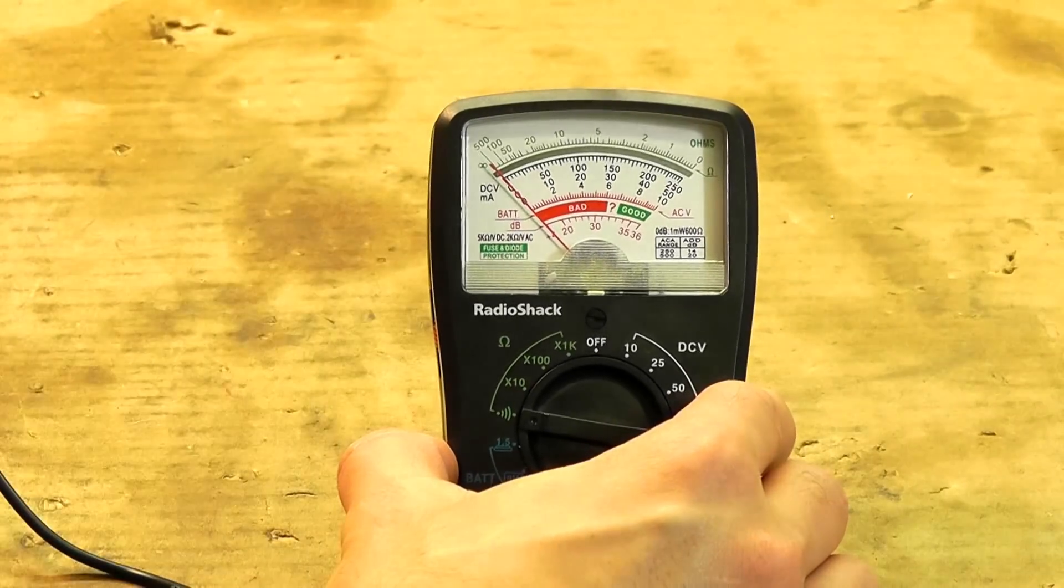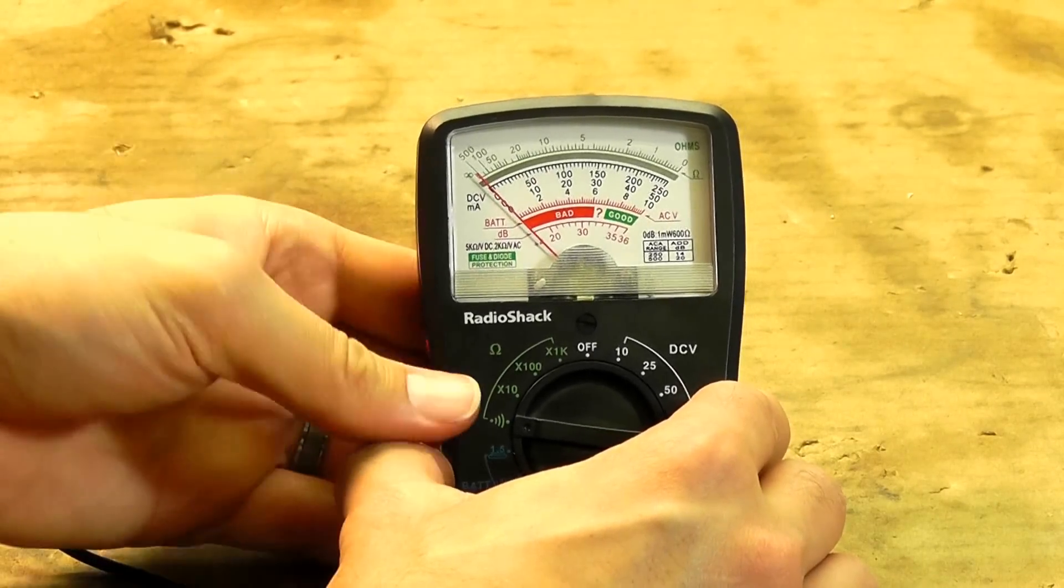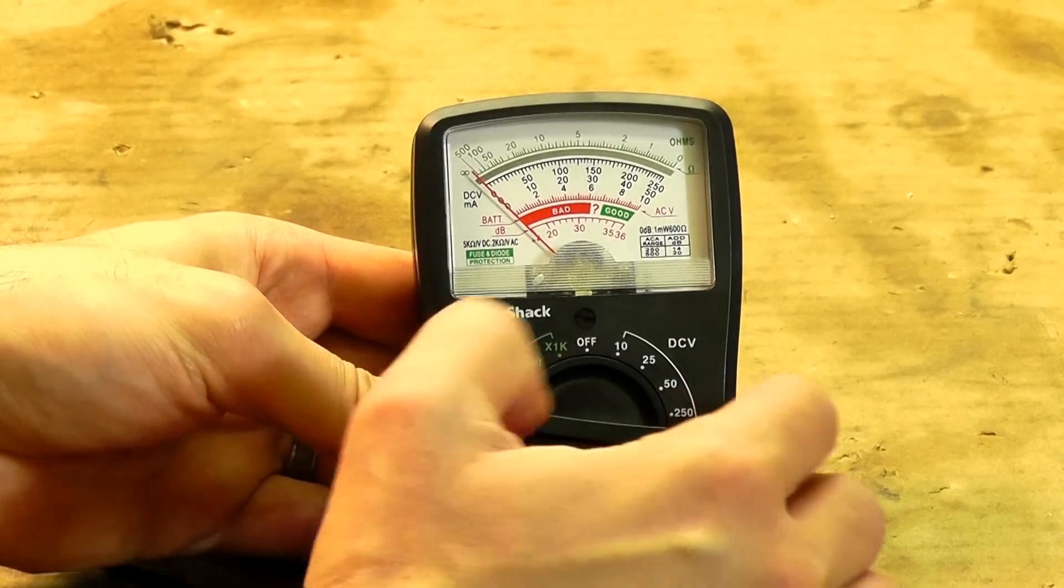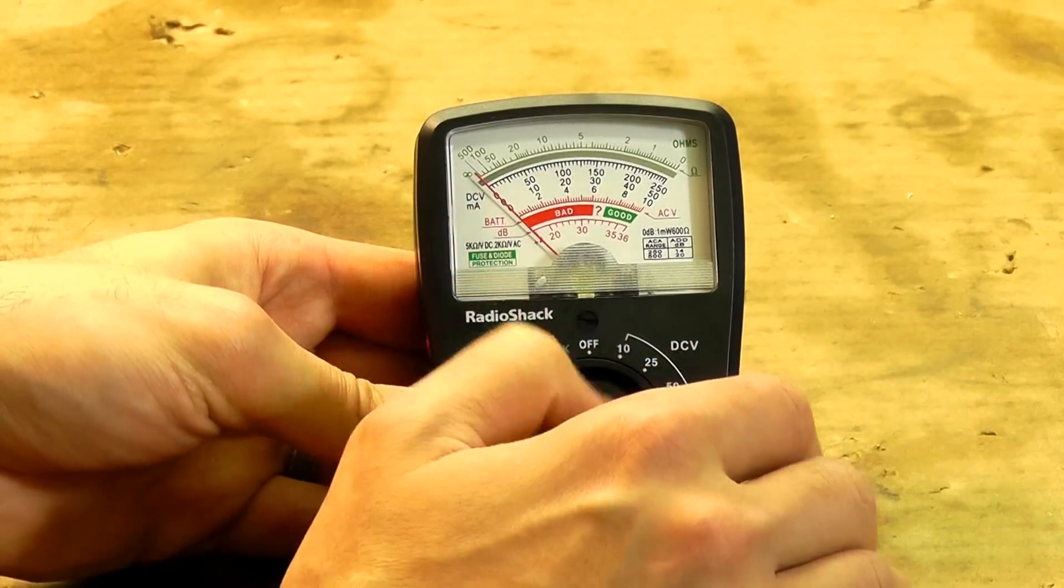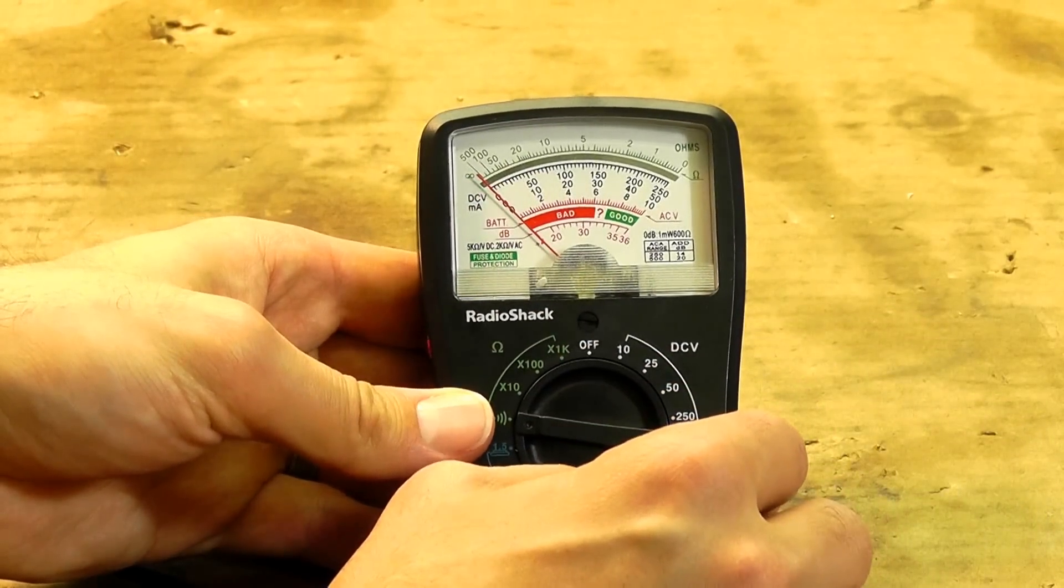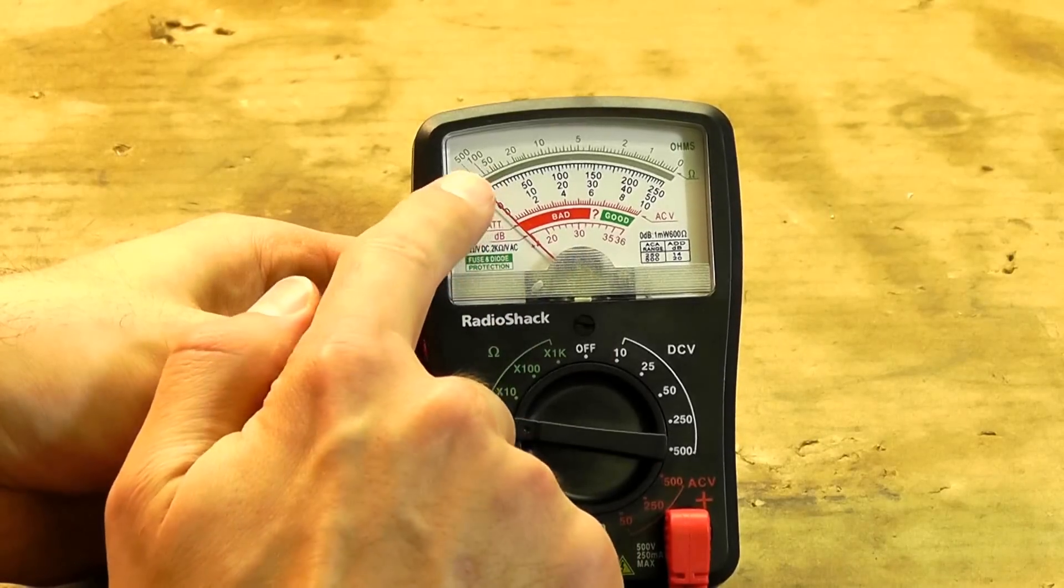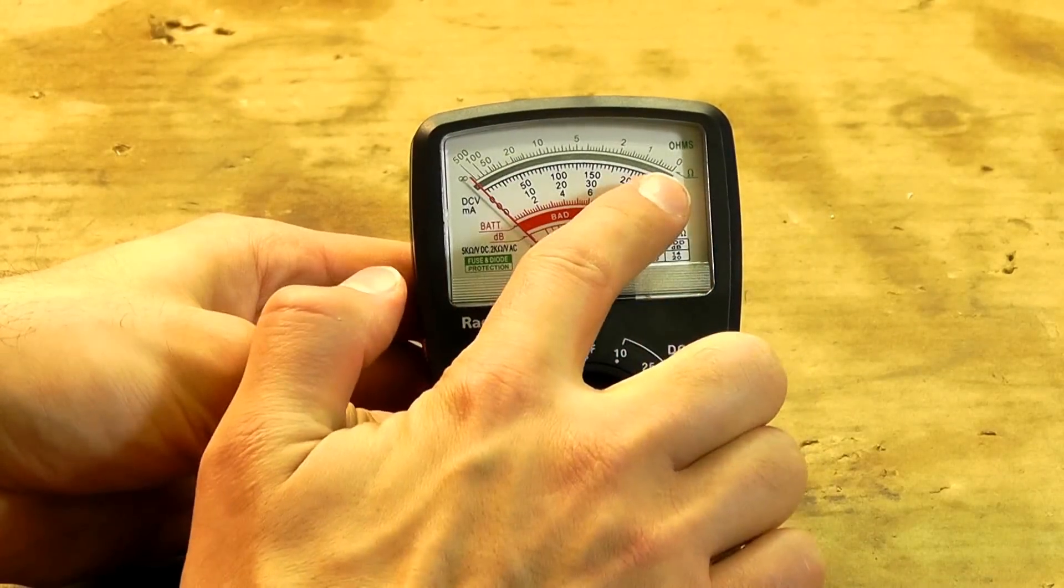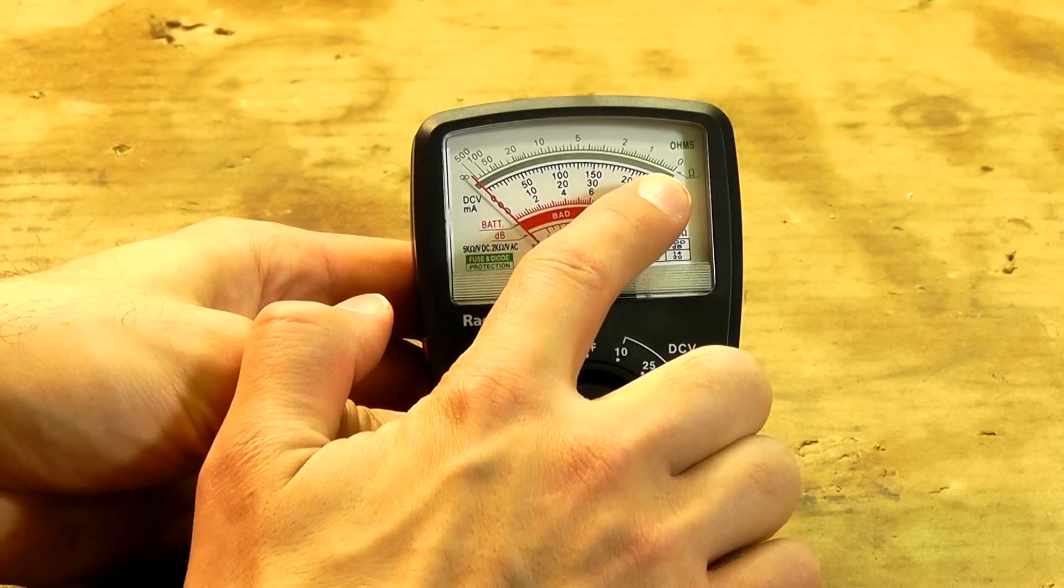You could use a more detailed, more specific test, but this is a good idea to tell if it's just 100% defective or not. If it was defective, the meter would jump all the way to the right to zero and it would stay there.